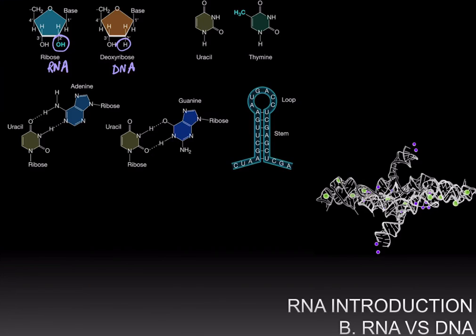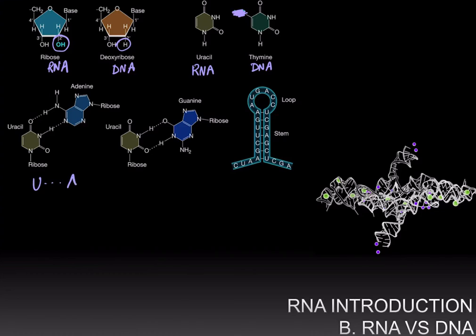Another key difference is that DNA has thymine as one of the pyrimidine nitrogenous bases, whereas RNA does not have thymine but instead has uracil. The main way that uracil differs from thymine is that there is no methyl group on the fifth position — the fifth carbon — in uracil.